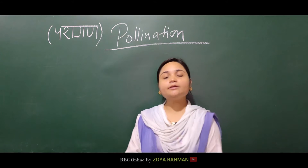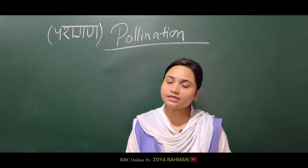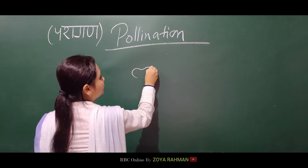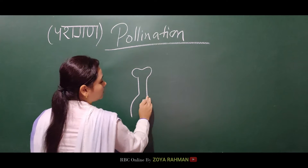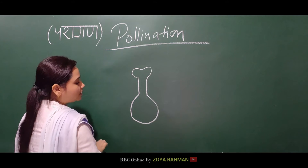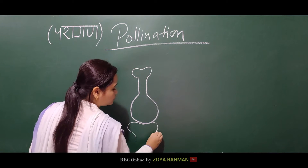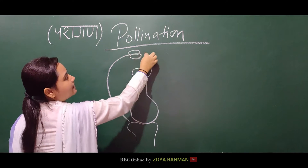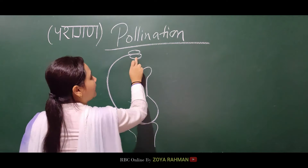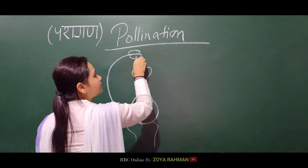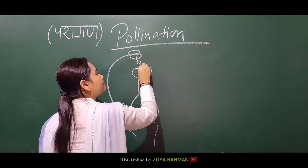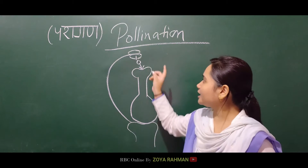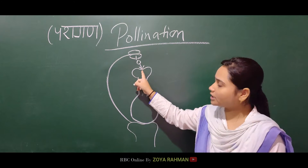Pollination means the transfer of pollen grains from anther to stigma. Let's draw a basic diagram. This is the female part of a flower. The base is known as the thalamus, and this is the anther. Pollination means that the pollen grains are released from the anther and reach the stigma.